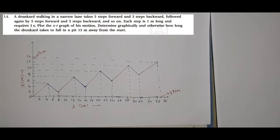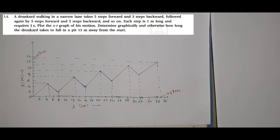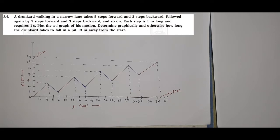Hello students. This is problem 3.4. Read the question: a drunkard walking in a narrow lane takes five steps forward and three steps backward, followed again by five steps forward and three steps backward, continuing. Each step is one meter long and requires one second. So for 5 steps it takes 5 seconds, and for 3 steps it takes 3 seconds.